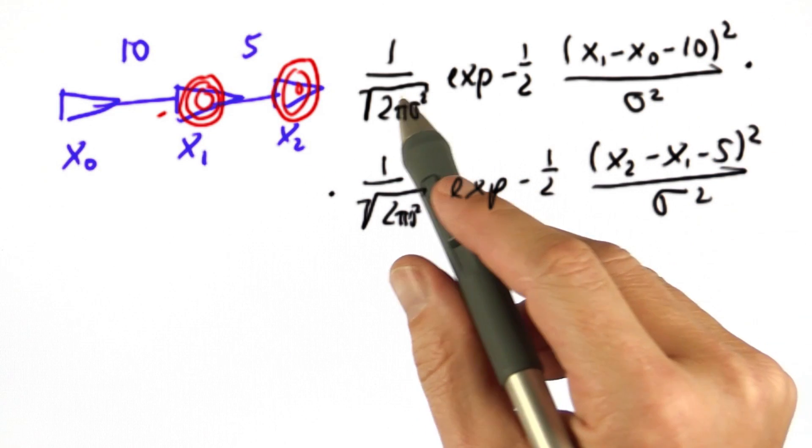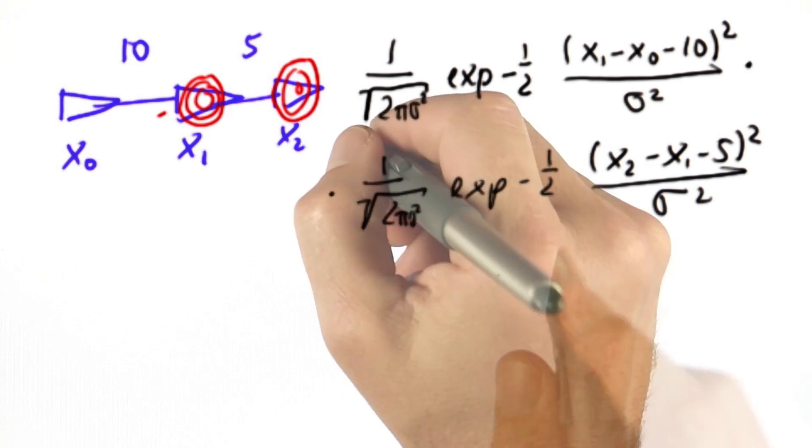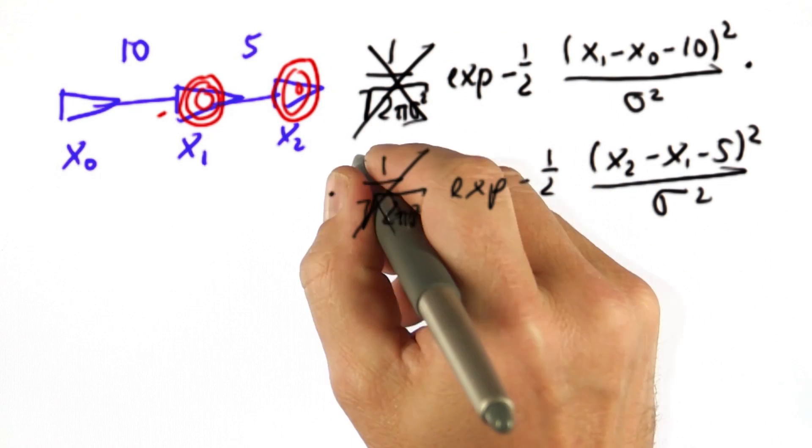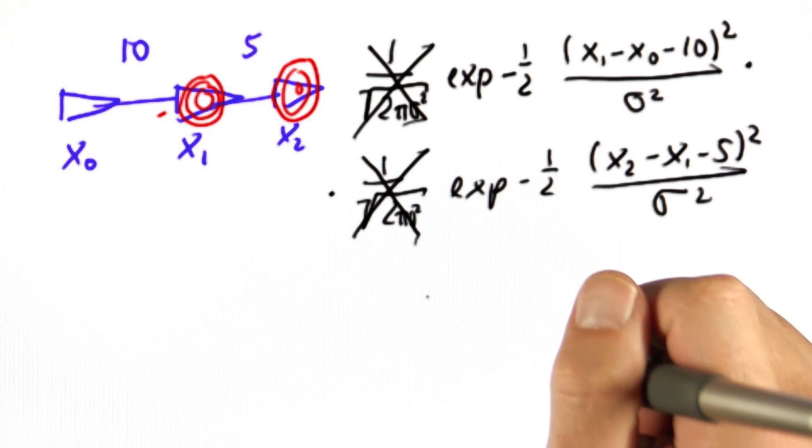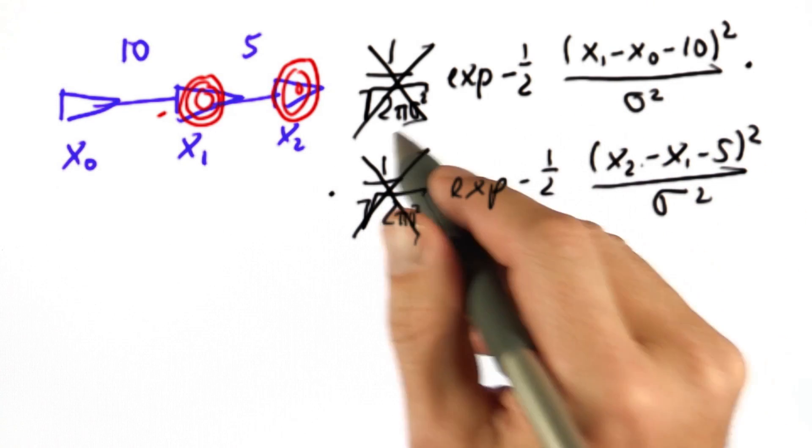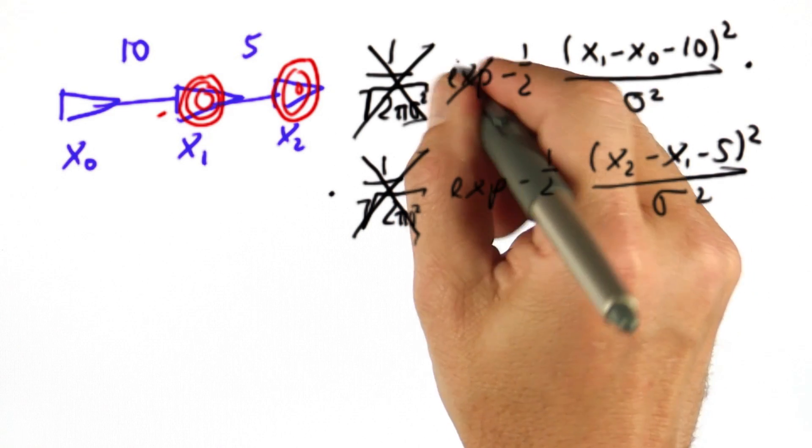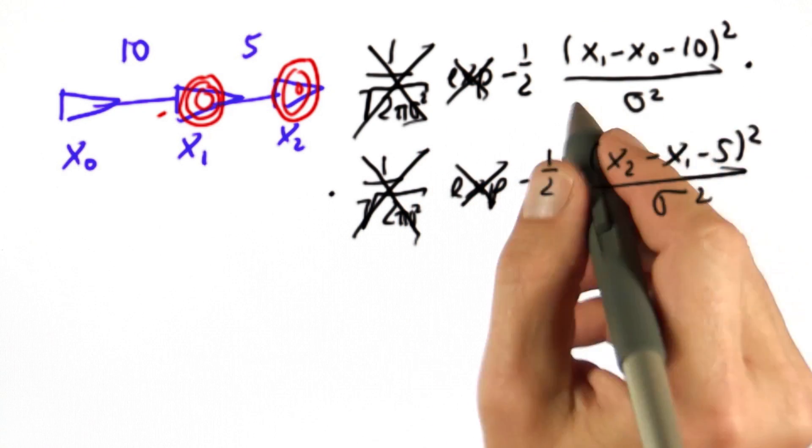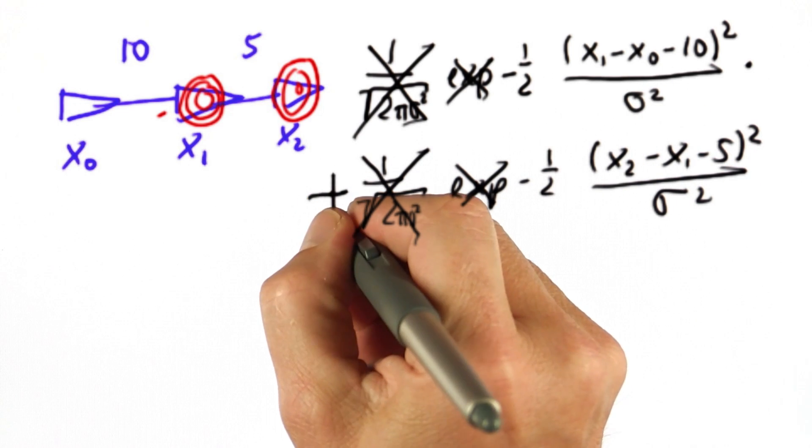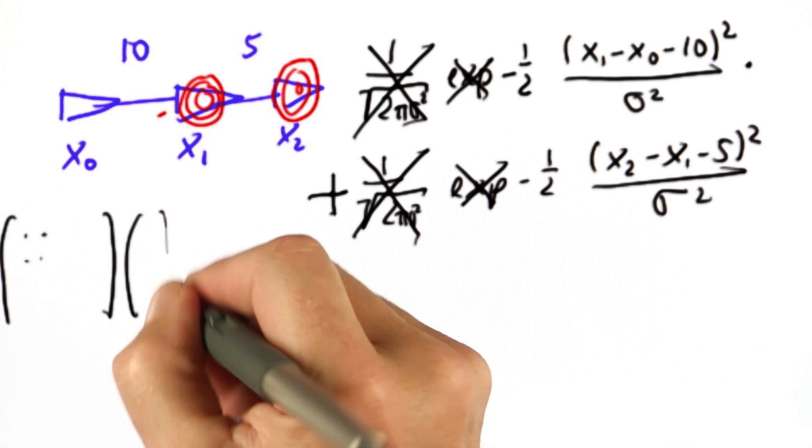If we want to maximize the product, we can play a number of interesting tricks. First, the constant has no bearing on the maximum, just on the absolute value. So if we want to find the best values for x0 and x1 and so on, we can drop the constant. Secondly, we can drop the exponential if we're willing to turn the product into an addition. And remember, we added things in omega and in sigma. That's why.